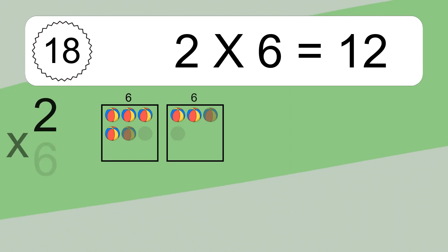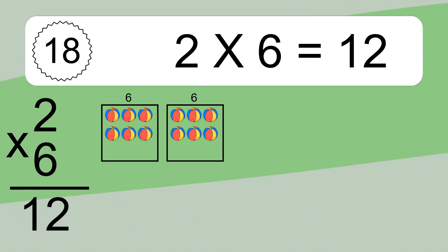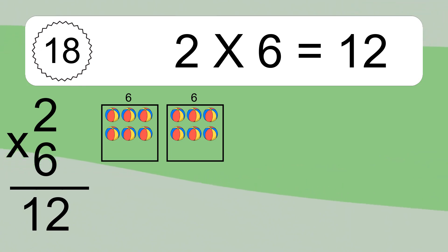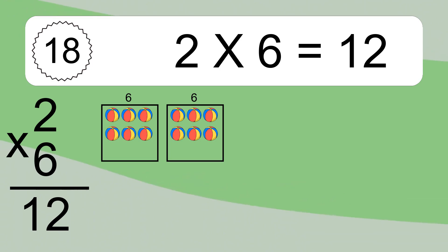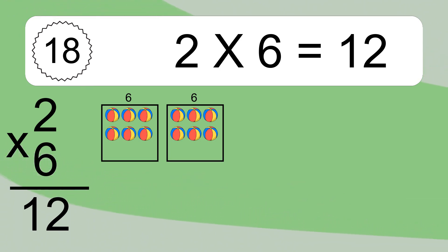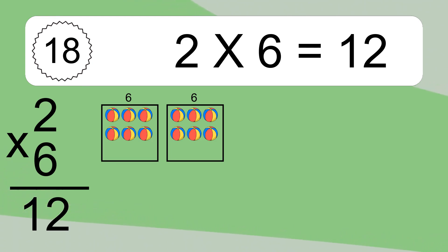2 times 6 equals 12. We have 2 boxes, and each box has 6 colorful balls inside. If you count all the balls in all the boxes together, you will have 2 times 6 balls. This equals 12 balls.